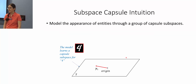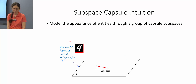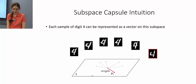Before getting into the formal definition, let's see the intuition behind subspace capsules. In subspace capsules, we try to model the possible variation in the appearance of entities through a group of capsule subspaces. For instance, if the entity is digit 4, the model learns a capsule subspace for that, and each sample of digit 4 can be represented as a vector on this subspace.